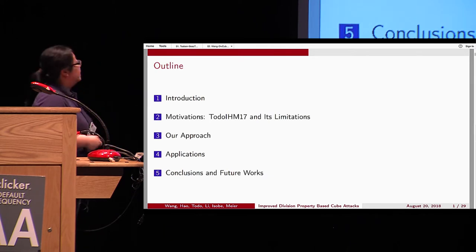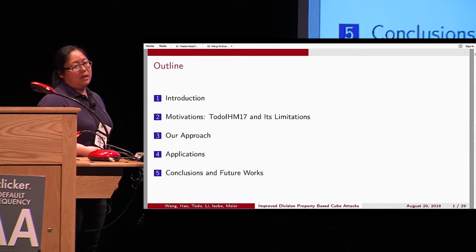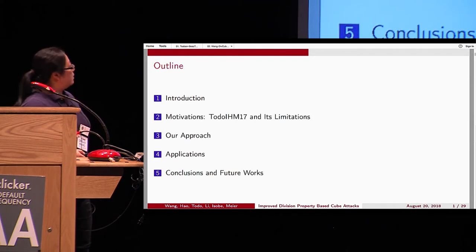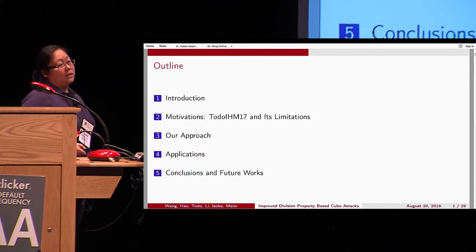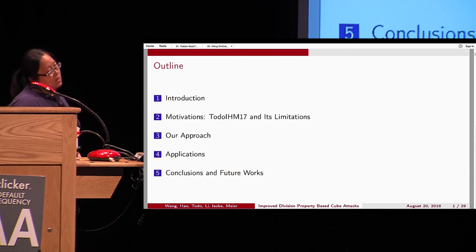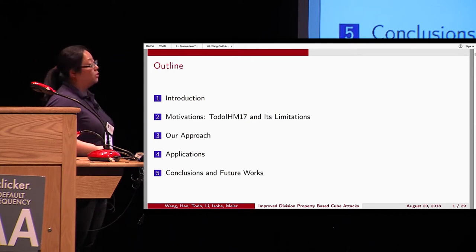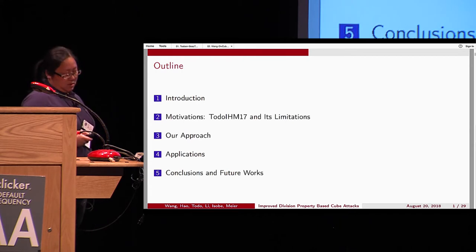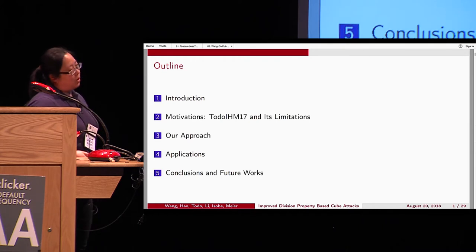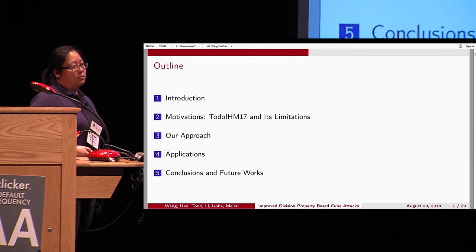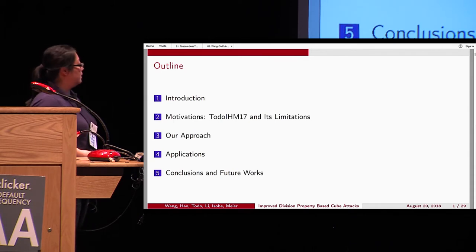Let's first give some introductions about the cube attack and stream ciphers, then I will recall the idea of the Toto et al. Crypto 2017 paper, and we will point out some limitations which motivated us to do further improvements to the cube attack, then we give our approach to solve these problems, apply our method to some stream ciphers and give some improved results, and then I will conclude.